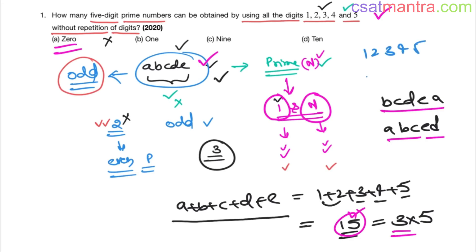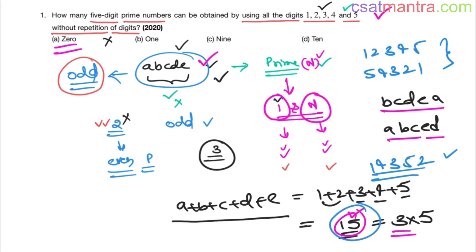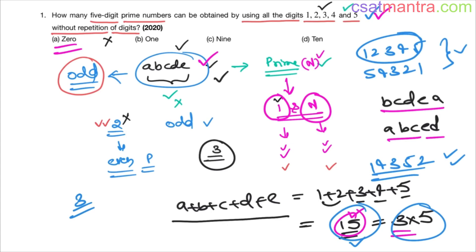Whether it is 1 2 3 4 5, or 5 4 3 2 1, or 1 4 3 5 2 — the sum of digits is always 15, and 15 is divisible by 3, so these numbers are all divisible by 3 and cannot be prime. No matter how many permutations and combinations you try, you cannot form any prime number using these digits. The question will always be structured this way — based on the sum of digits.